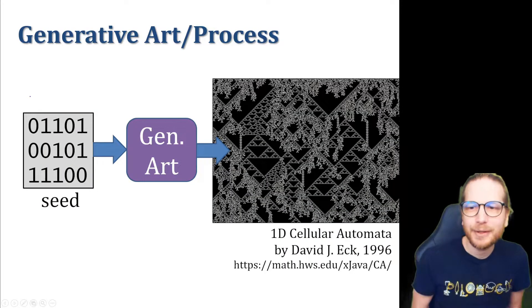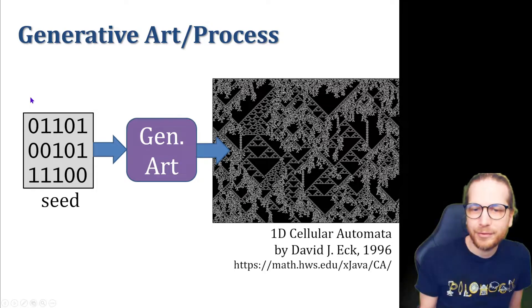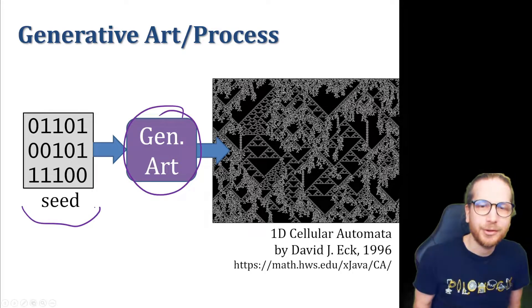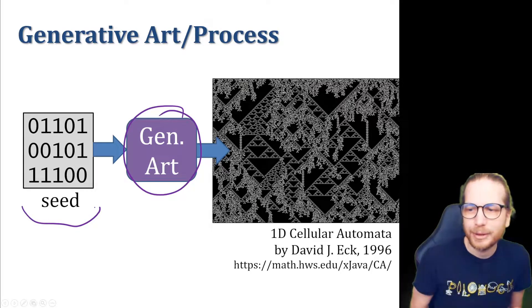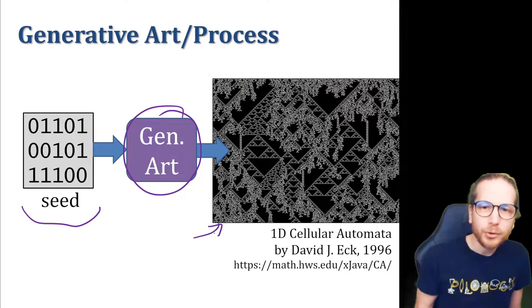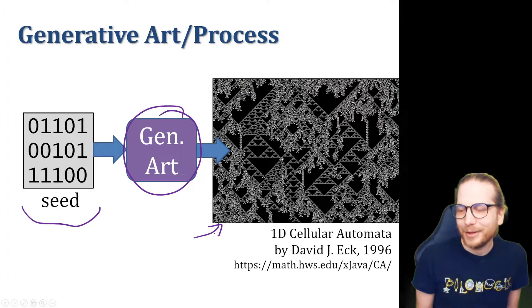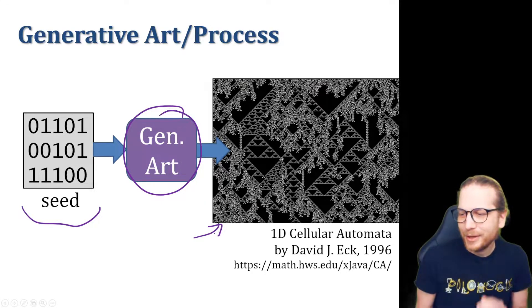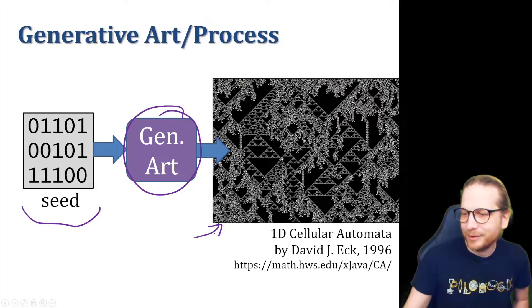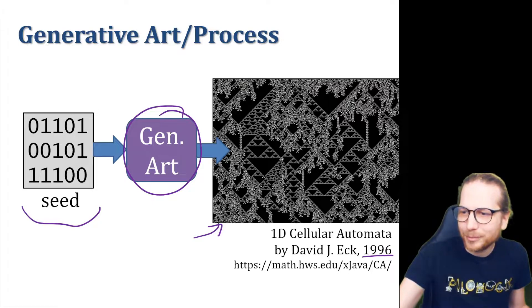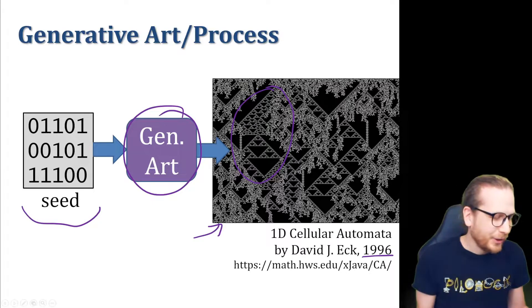In general, we can think of generative art as an algorithmic process. So there's some algorithm here in the middle that converts some kind of input, which I'll just call a seed. Could be a seed to a random number generator in this case. And you produce some cool art, music, sculpture, drawing, whatever, as a result. This is an early example of 1996 of a 1D cellular automata making some cool semi-structured patterns.